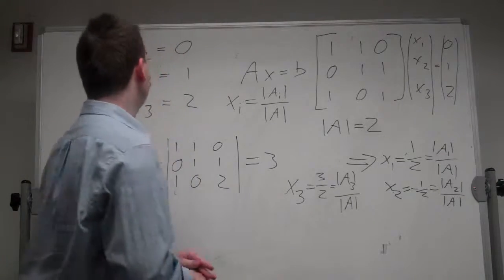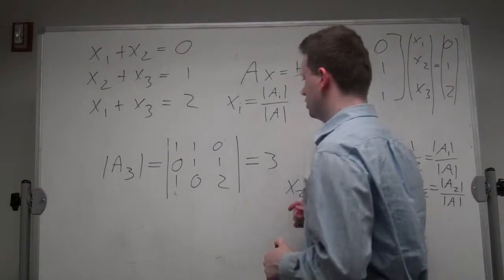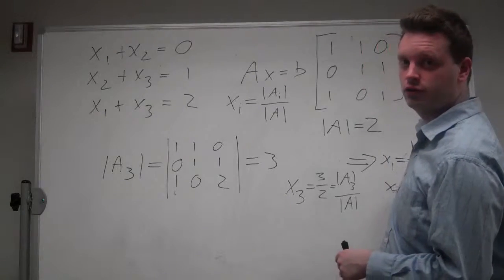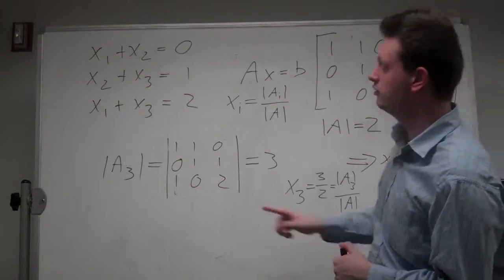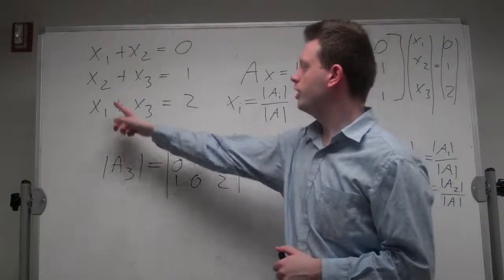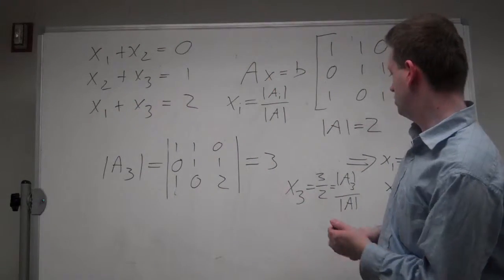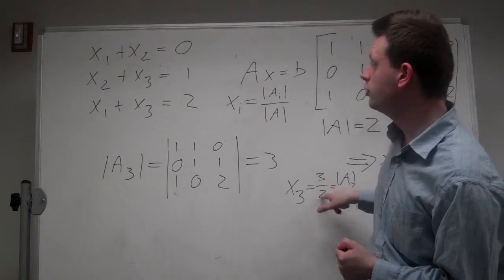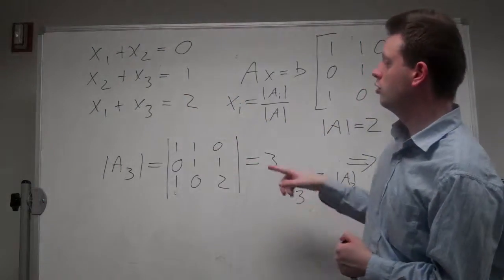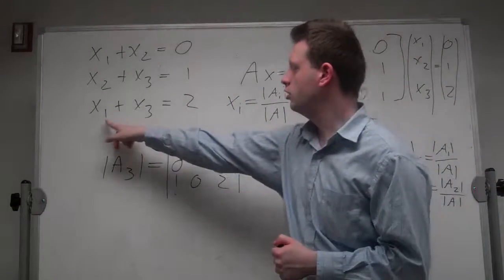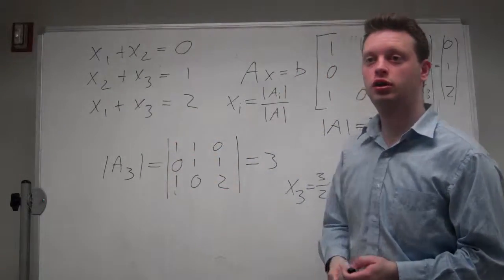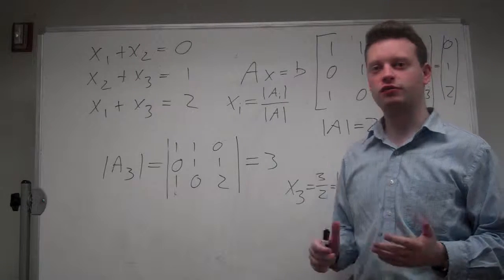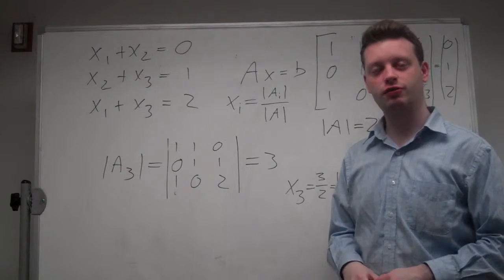Let's cross-check. So x1 is 1 half, so 1 half plus minus 1 half is 0, minus 1 half plus 3 halves is 1, 1 half plus 3 halves is equal to 2. So we solved the system of equations correctly. Thank you for watching.